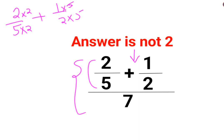So multiply by 5. So we have 2 multiplied by 2 which is 4 plus 5 upon 10 because here also this became 10 and this also became 10.